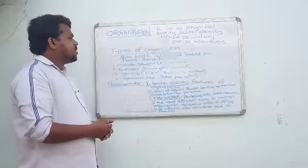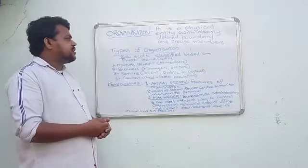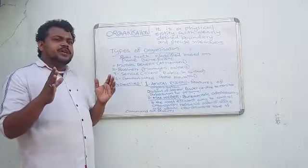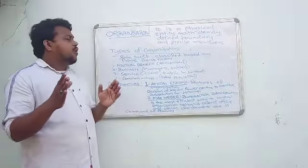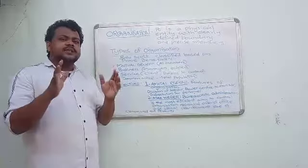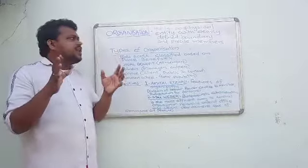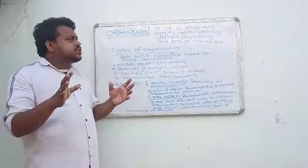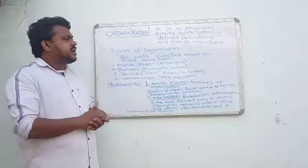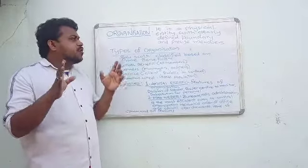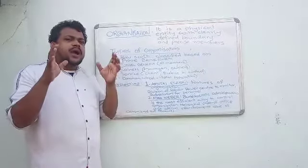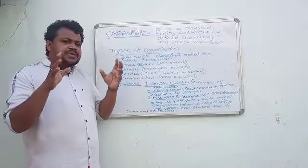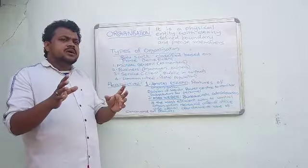Now let us discuss what is organization and what are the types of organization and what are the perspectives on organization. What is an organization? The organization will have a physical entity. Physical entity means a concrete physical structure will be there and it will have a definite boundary. Moreover, there will have the precise members in any organization. There will be precise, clear members.